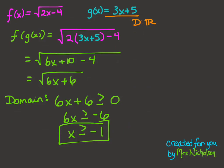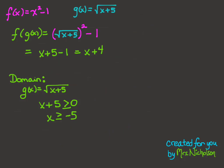Pause the video and try the next one on your own. In this example, you end up with the composite function x plus 4. x plus 4 is just a linear function, which does not have any limit on its domain — it has a domain of all real numbers. But your input function g of x does have a limited domain. Because it's a square root function, its domain is limited. So when we consider the domain of the composite function, we have to consider the domain of g of x. Whatever is underneath the radical, in this case x plus 5, must be greater than or equal to 0. So we end up with the domain x greater than or equal to negative 5. Even though the linear function does not have a limited domain, the input function g of x did, and that ends up limiting the domain of the composite function as well.